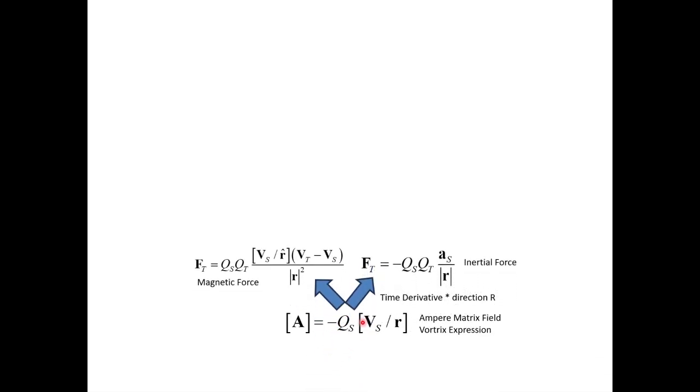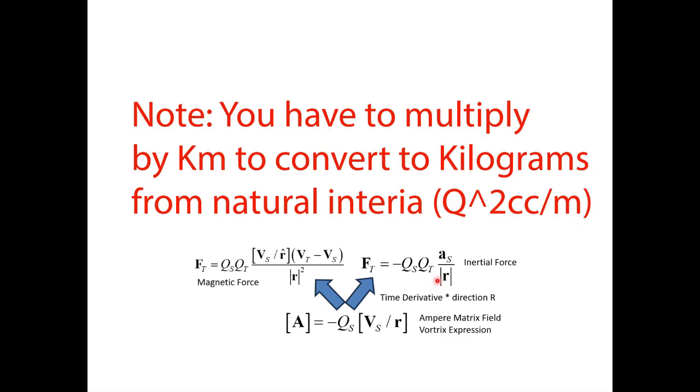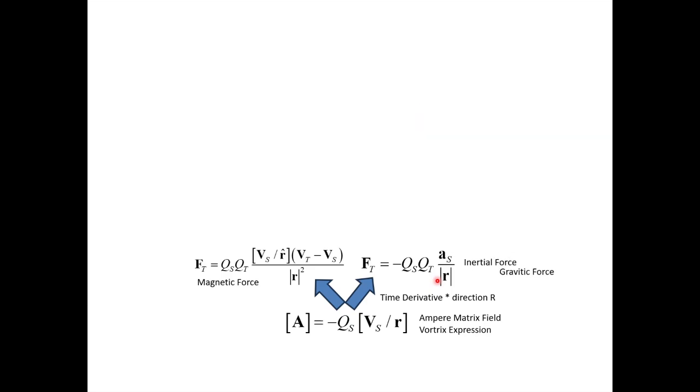If we take the time derivative of this matrix field, we end up with the inertial force and the magnetic force. And if you notice closely, our inertial force is F equals MA. In ethereal mechanics, mass, what you call mass, we call inertia, is square coulombs per meter. Now this inertial force is also the gravitic force, as we demonstrated before. So this is new induction, which is also the force of gravity, and it's the force of inertia.